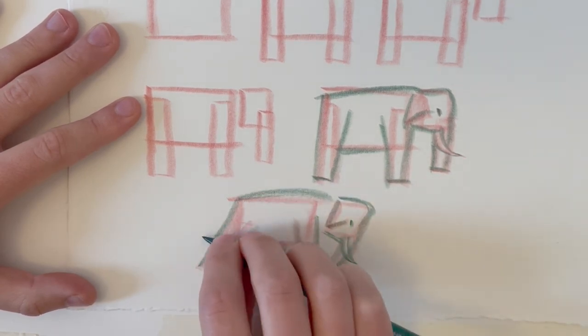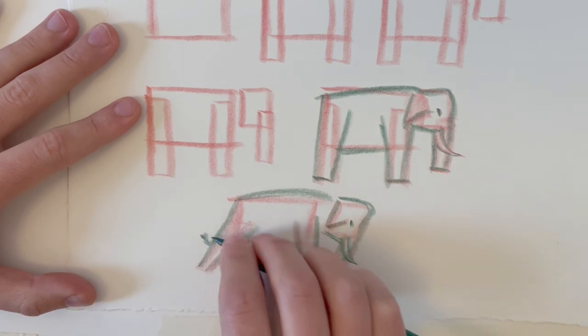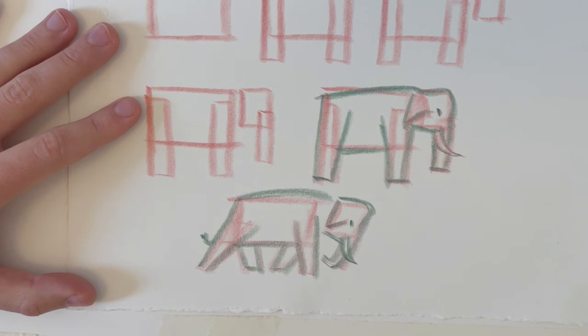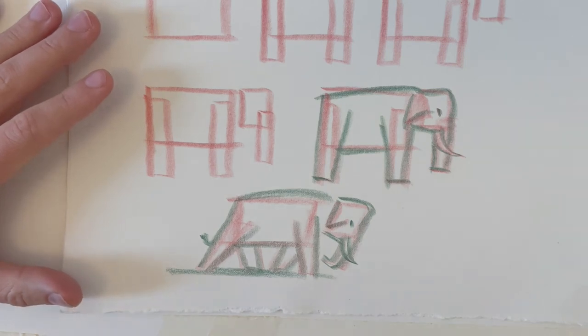These are the legs behind. I could add the tail in as well, just behind as well. And something I like to do with drawings as well is just by grounding them, you can just add a little shadow, which really helps. I find just to give them a bit of weight like that.